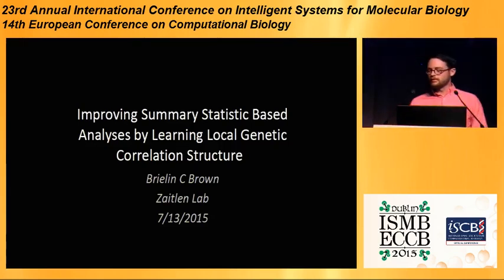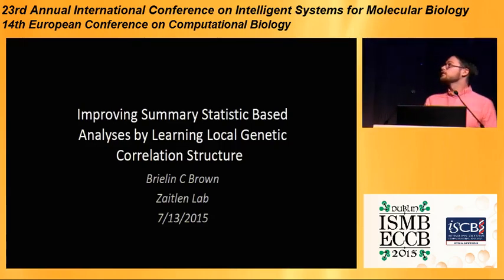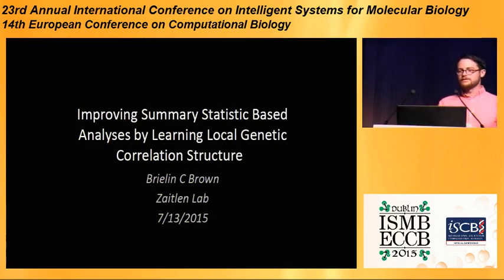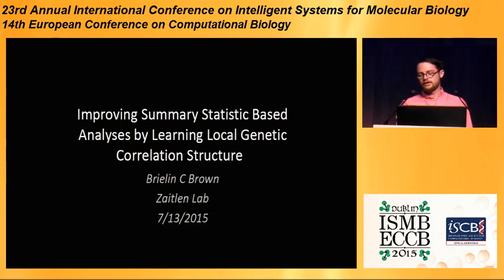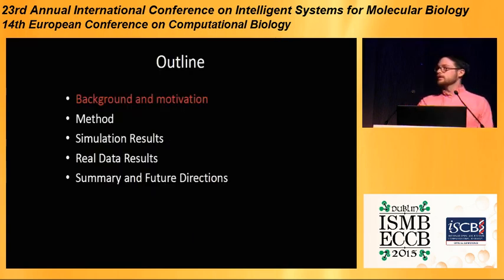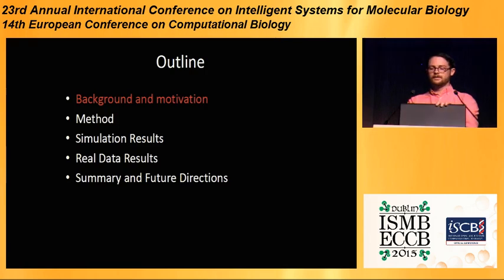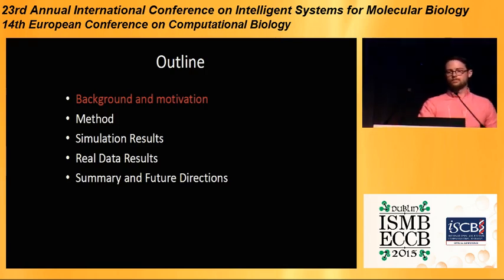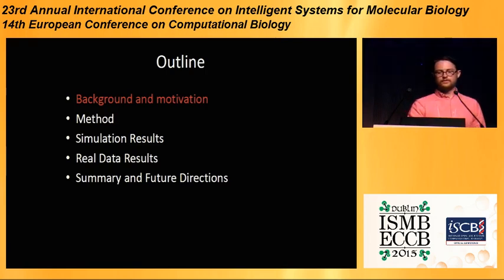Hi, yes, I'm Breland from UC Berkeley. I'd like to thank the committee for having me out to talk to you today about improving summary statistic-based analysis by learning local genetic correlation structure. I work with Noah Zaitlin at UCSF, so this work was done with him and Danny Park. The outline of the talk will look something like this: I'll start with the background, then tell you a little bit more about the method, some results on simulated and real data, followed by a summary and future directions.